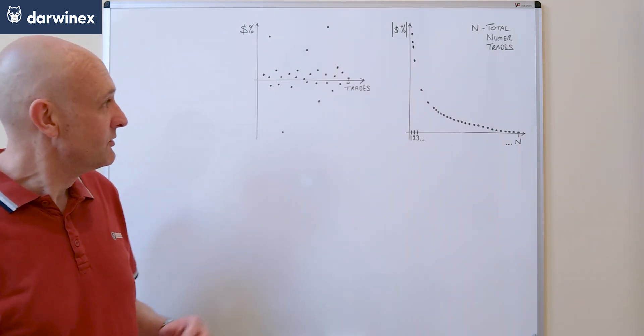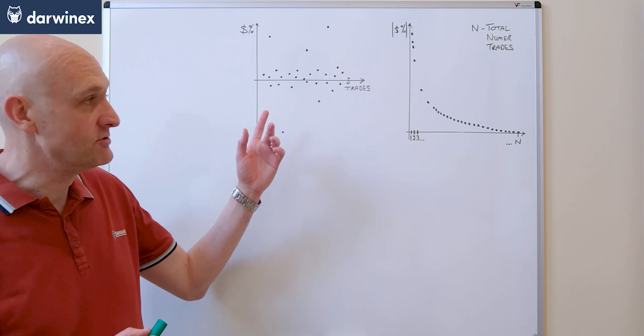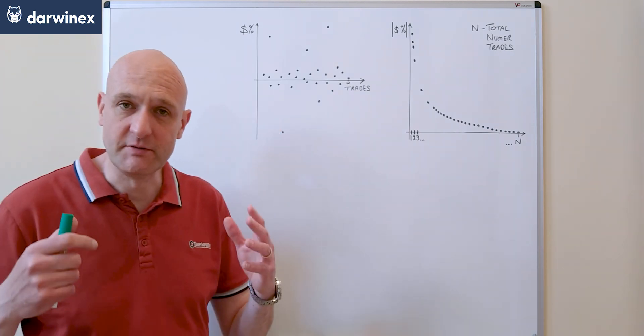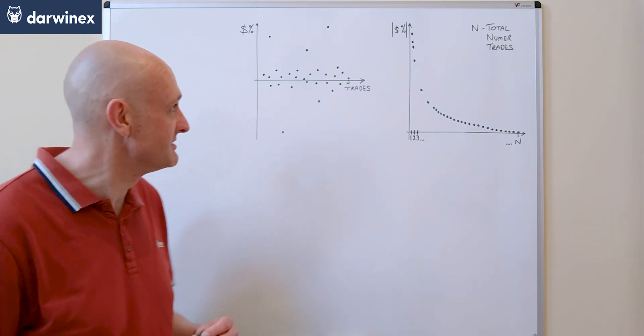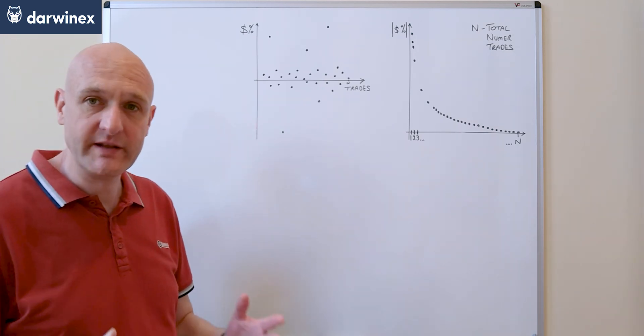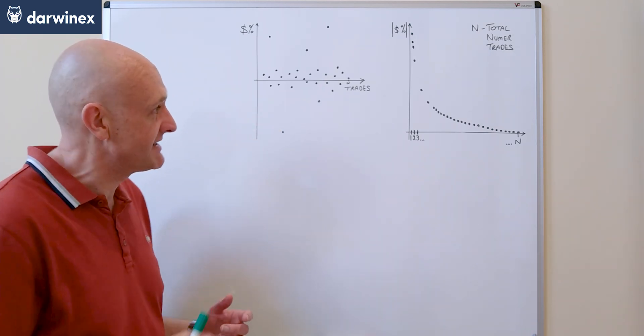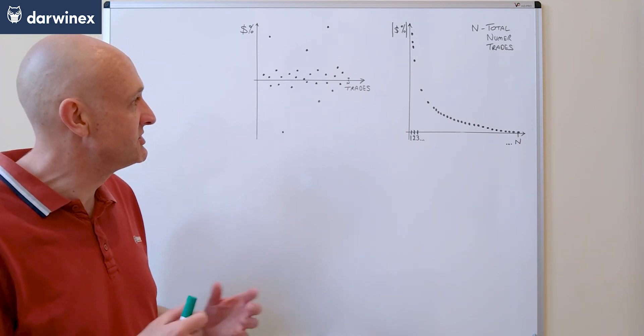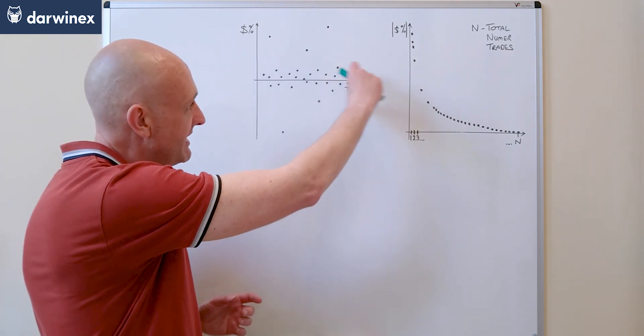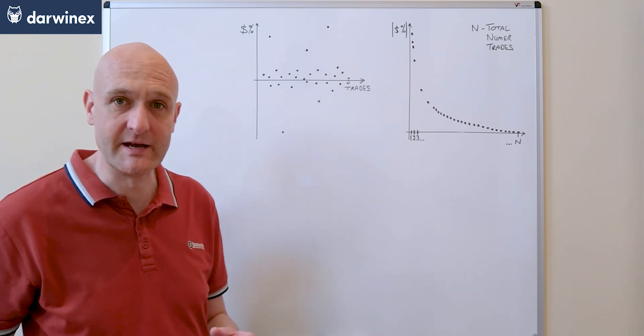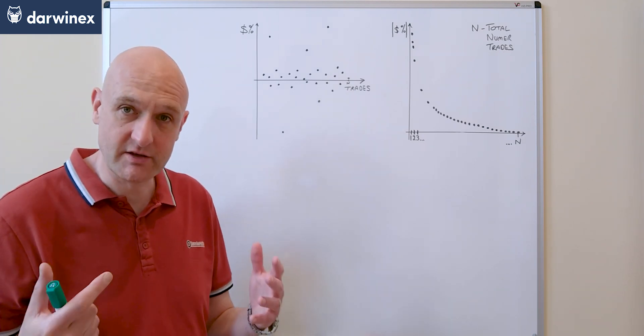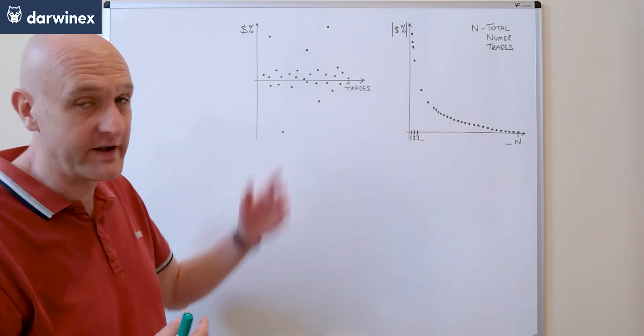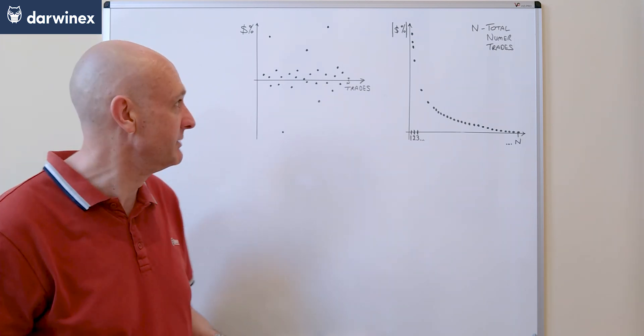On the left here we have a chart that shows all of the trades that were executed by one particular set of parameters. Above the x-axis we've got the winning trades, and below the x-axis we have the losing trades. You'll notice that the majority of trades occupy this band across the middle here.